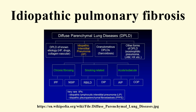According to the Joint ATS/ERS/JRS/ALAT 2011 guidelines, HRCT is an essential component of the diagnostic pathway in IPF, which can identify UIP by the presence of reticular opacities often associated with traction bronchiectasis. Honeycombing is manifested as clustered cystic airspaces, typically of comparable diameters, usually subpleural and characterized by well-defined walls disposed in at least two lines. Generally, one line of cysts is not sufficient to define honeycombing. Ground glass opacities are common but less extensive than reticulation, characteristically basal and peripheral though often patchy.